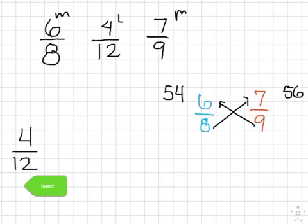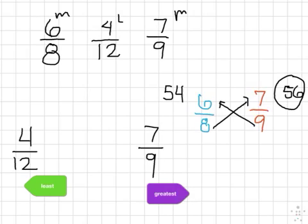And nine times six is 54. So we can see, if these are the numerators, this is the bigger fraction. Seven-ninths is going to be the bigger fraction. And so if that's the greatest one, then obviously six-eighths is the one that's going to be in the middle. Six-eighths. And there it is.